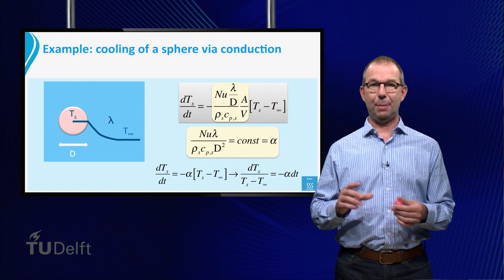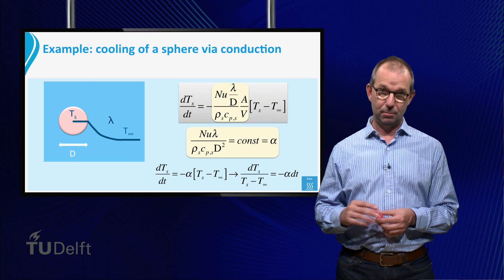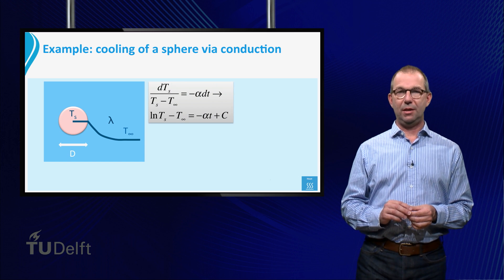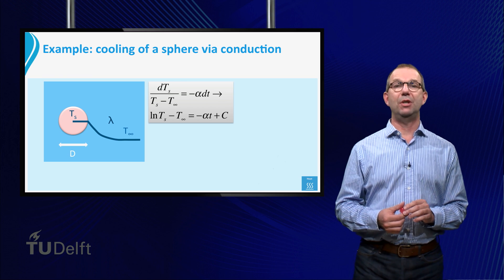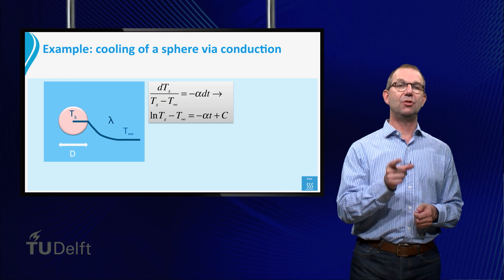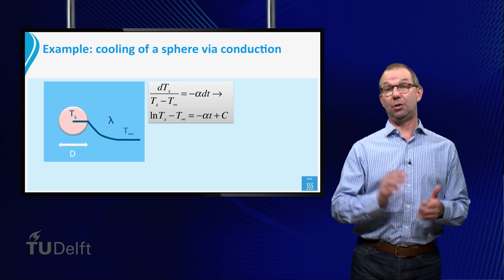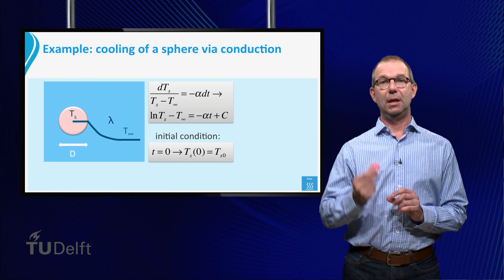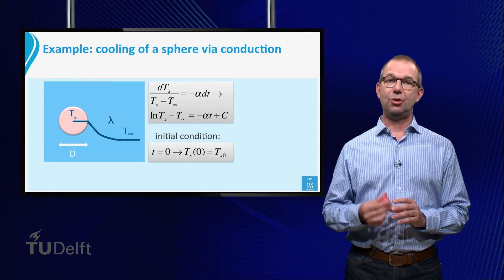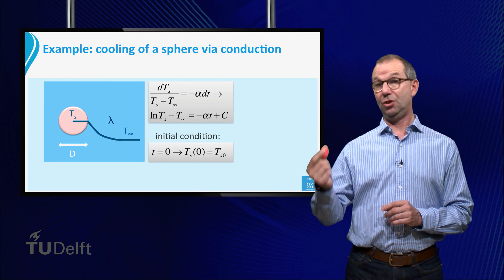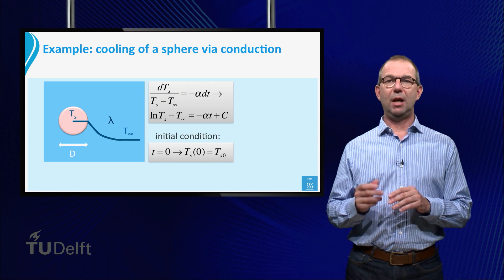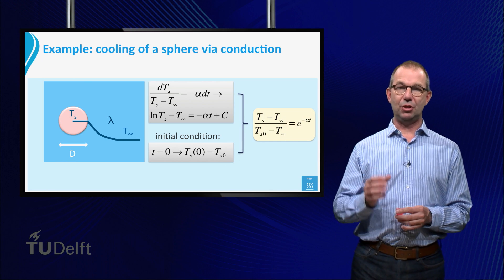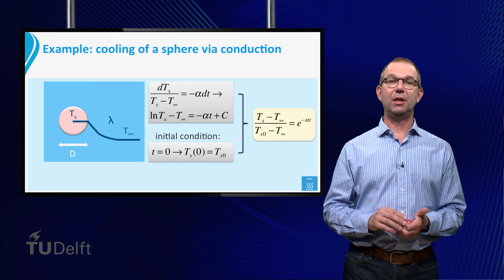This equation can be solved by separation of variables as is shown. The general solution of this equation is that the natural logarithm of the temperature difference is equal to minus alpha times T plus an integration constant. This constant can be found from the initial condition of the sphere. That is, at T equals zero, the sphere had a temperature T sub s zero, which is some given number that we in this example do not further specify. Combining the initial condition with the general equation allows us to find the integration constant C.